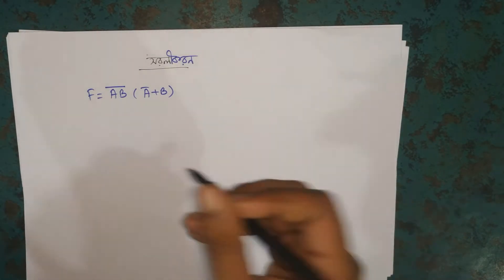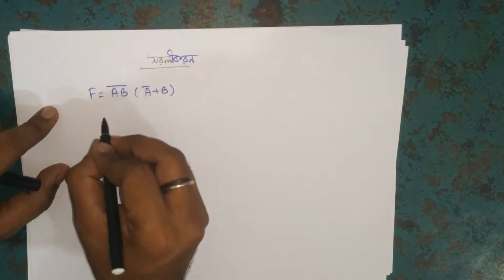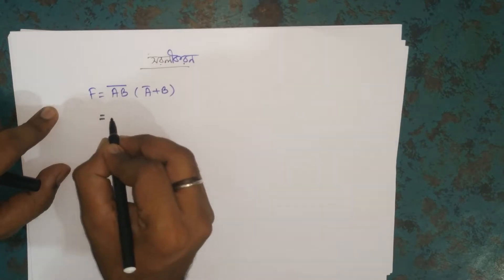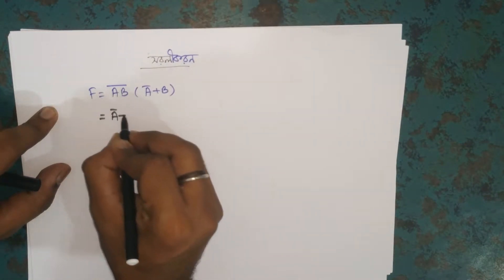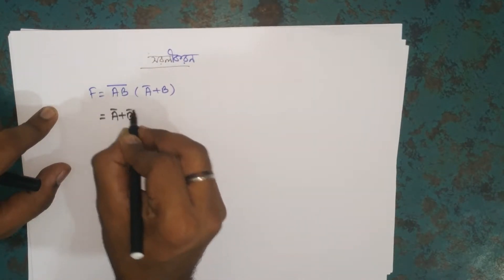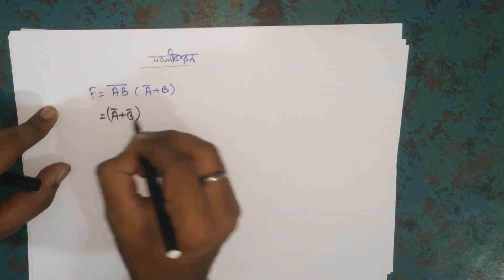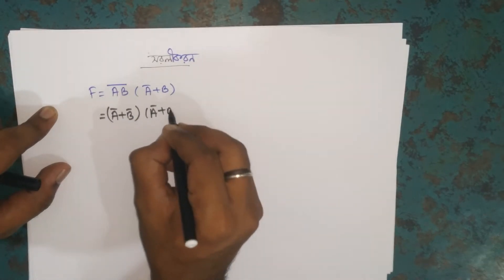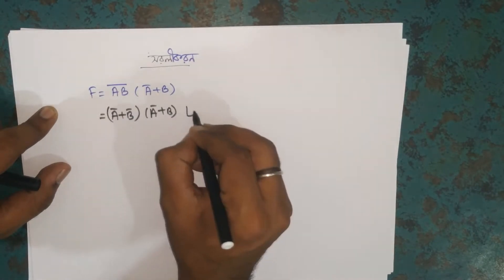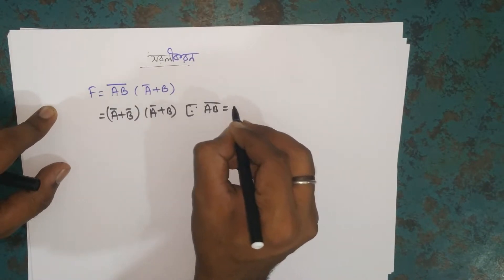We are going to do the same thing. A bar plus B — this is a Boolean algebra formula. If a, b whole bar, we are going to break it down.